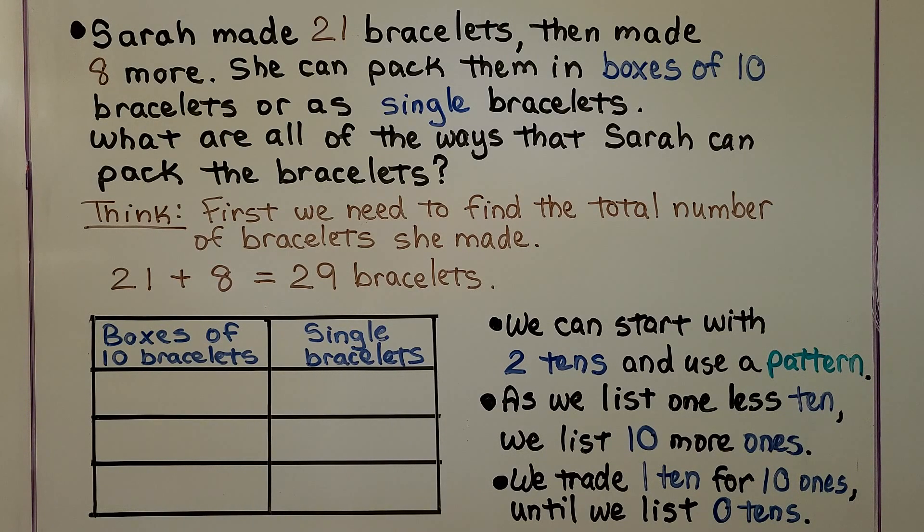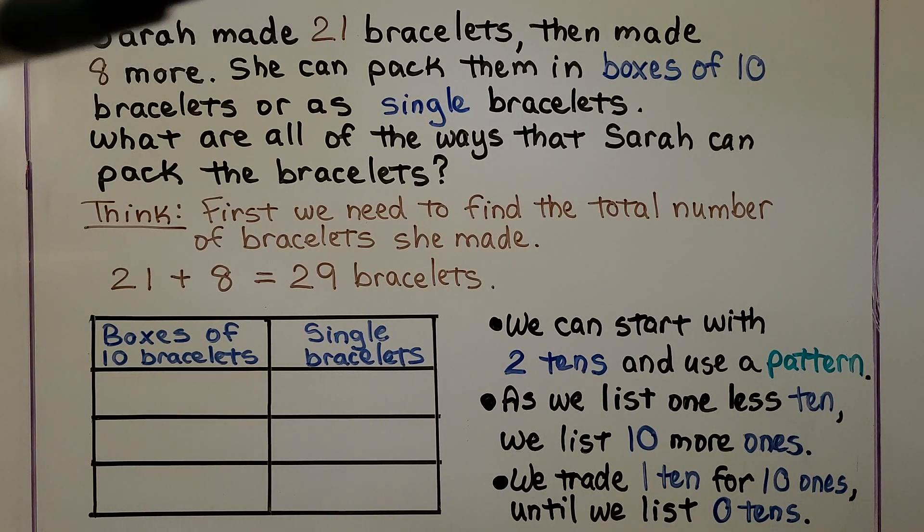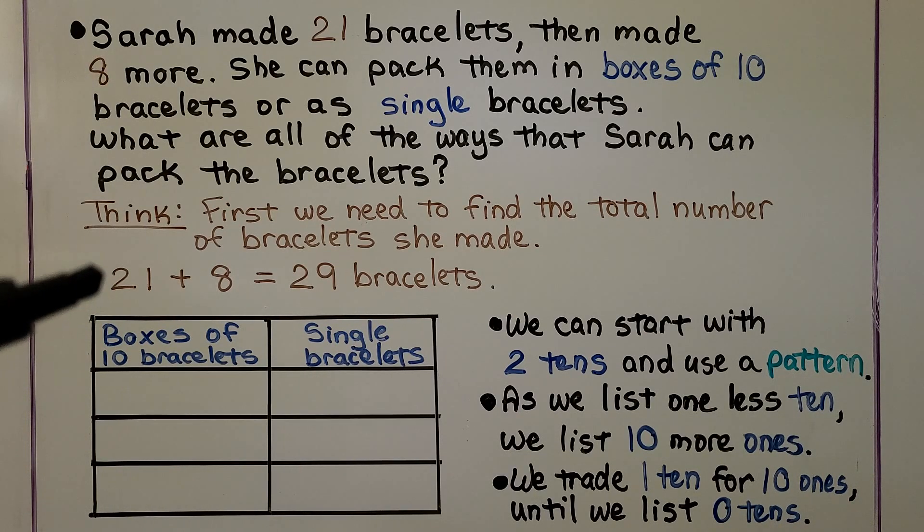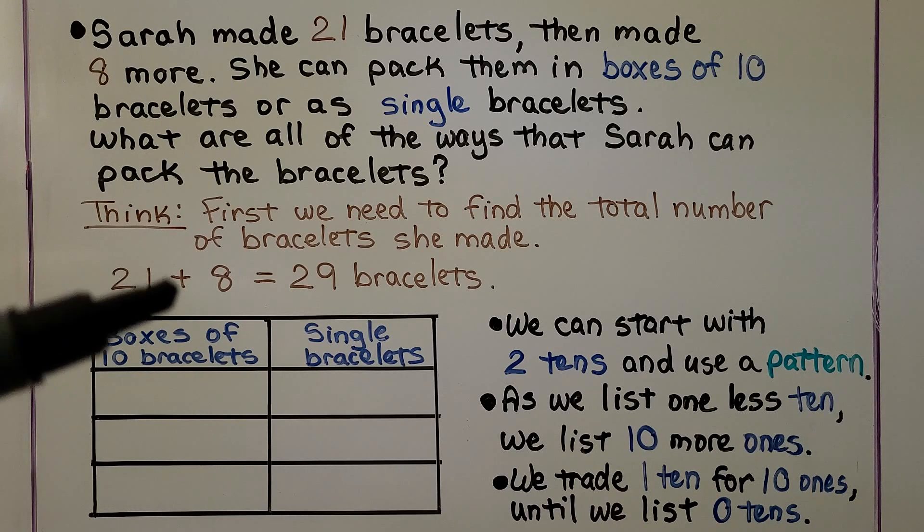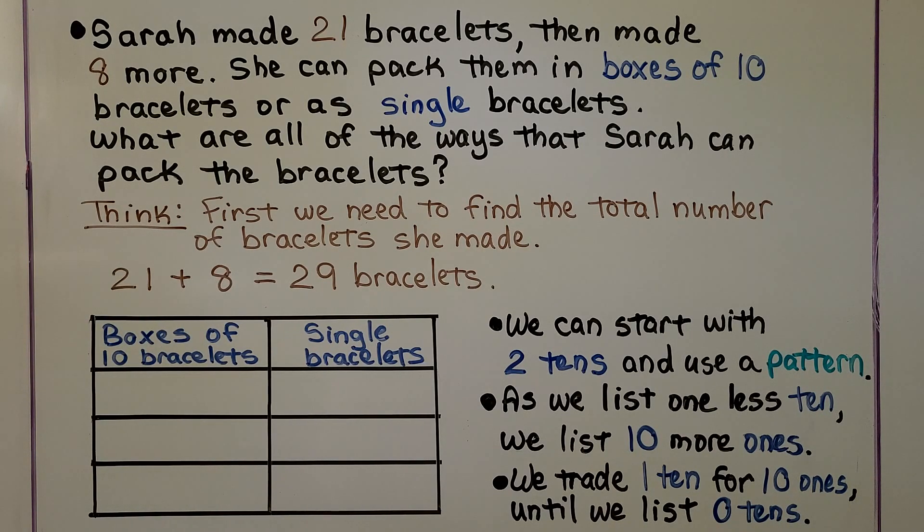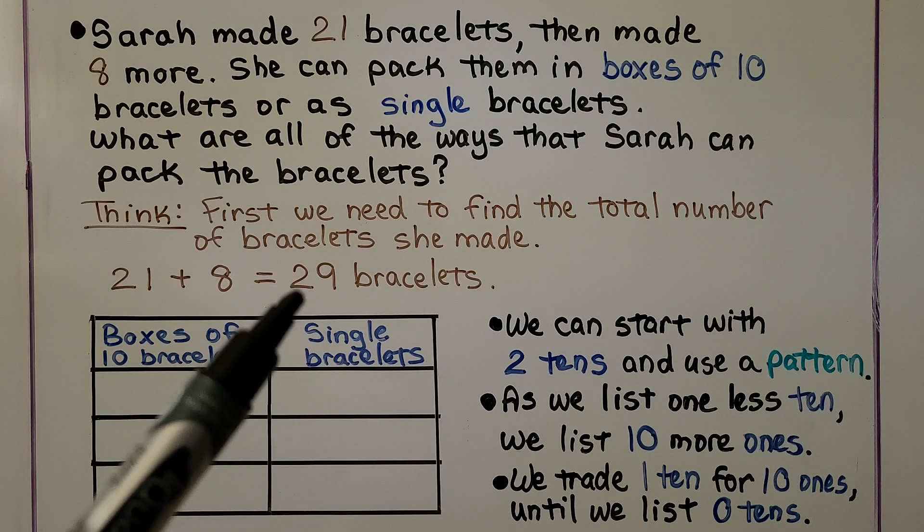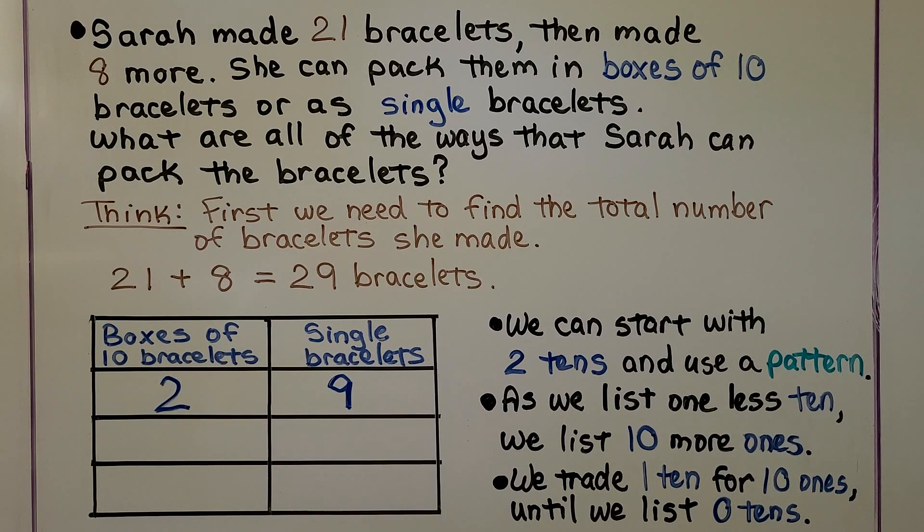Sarah made 21 bracelets then made 8 more. She can pack them in boxes of 10 bracelets or as single bracelets. What are the ways that Sarah can pack the bracelets? So we think. First we need to find the total number of bracelets she made. She made 21 then 8 more. That's 21 plus 8 more. 21 plus 8 is equal to 29 bracelets. And we can start with 2 tens and use a pattern. That's 2 boxes of 10 bracelets with 9 single bracelets. And as we list 1 less 10, we list 10 more ones.